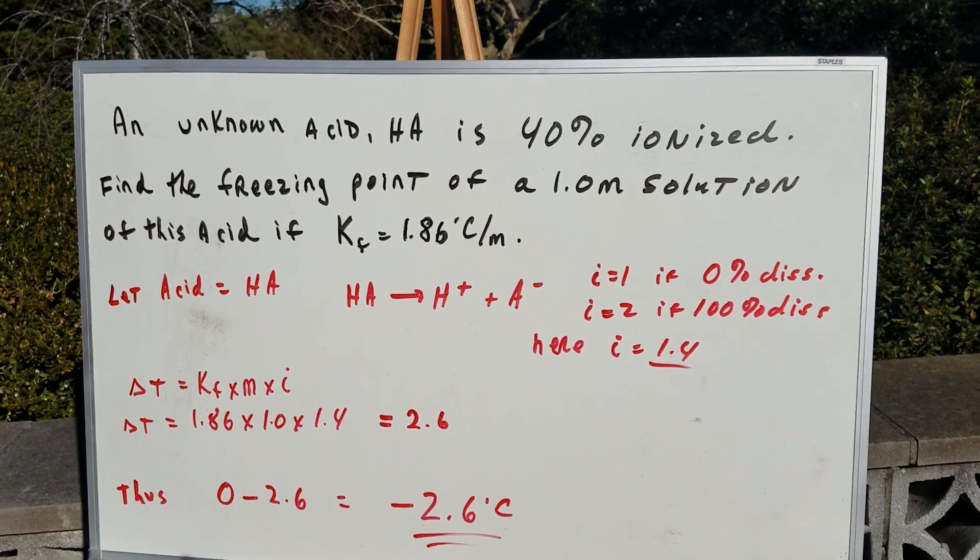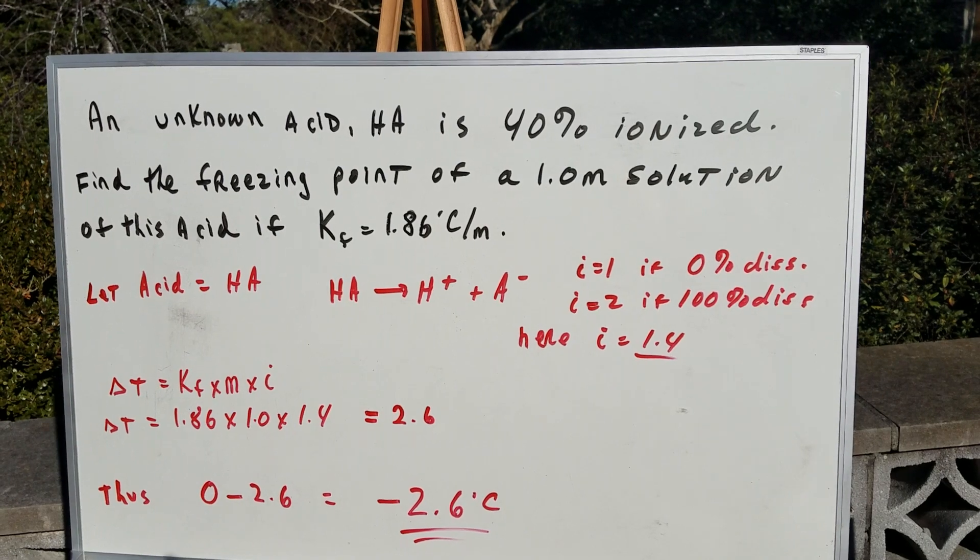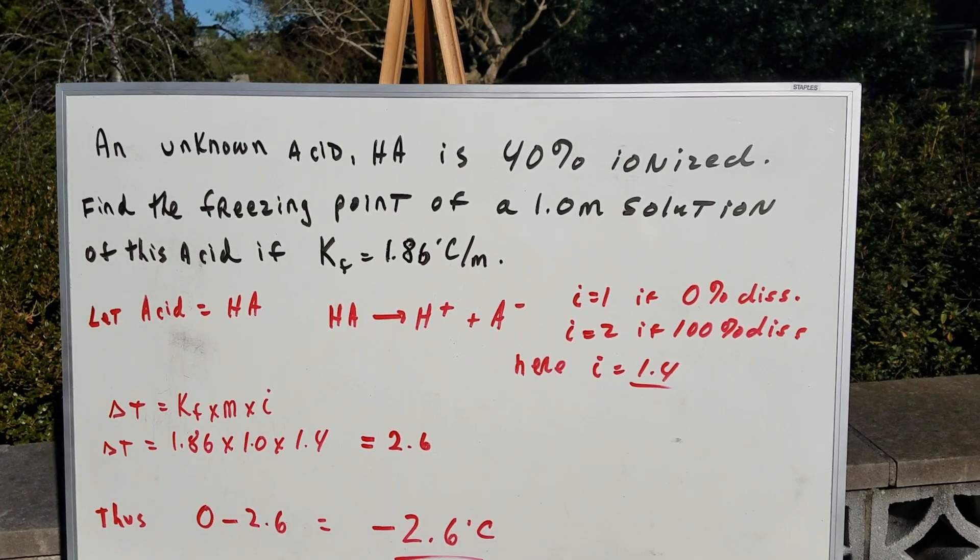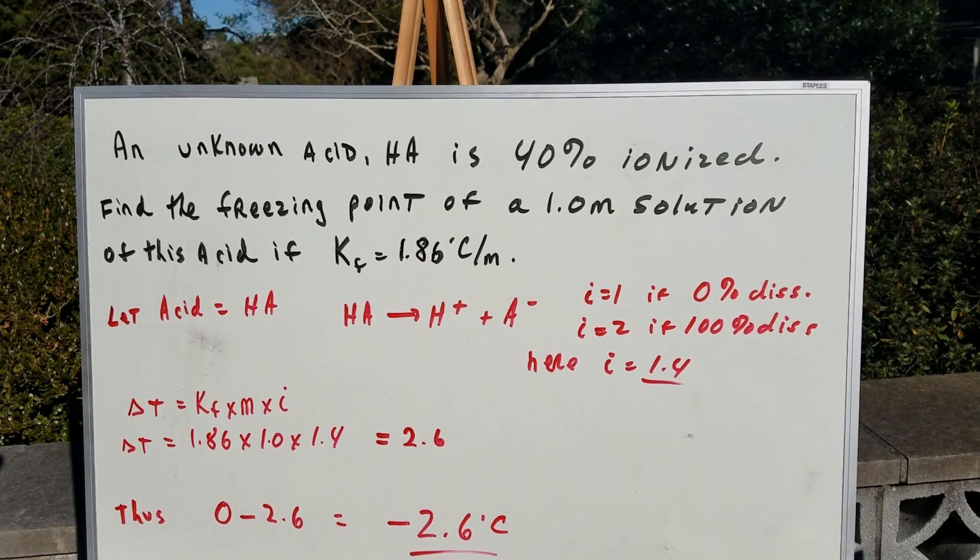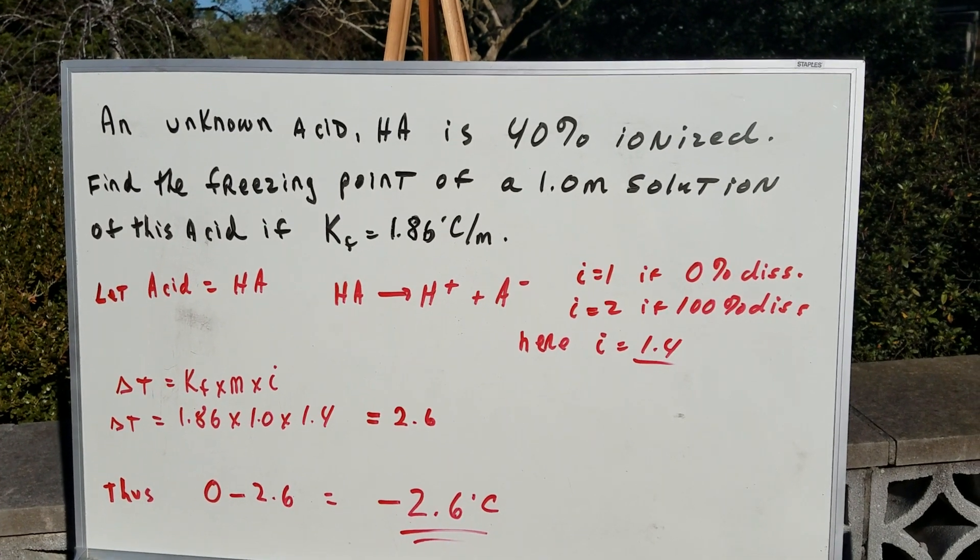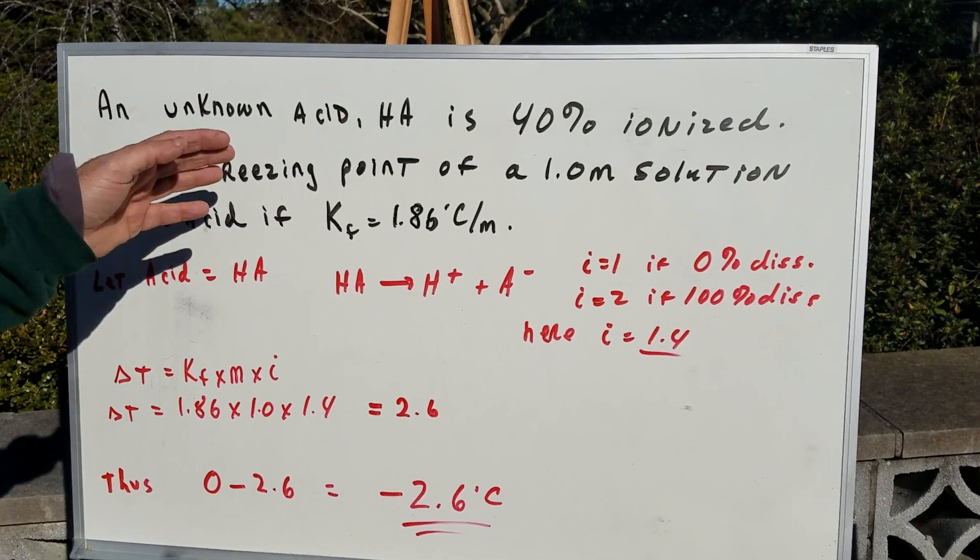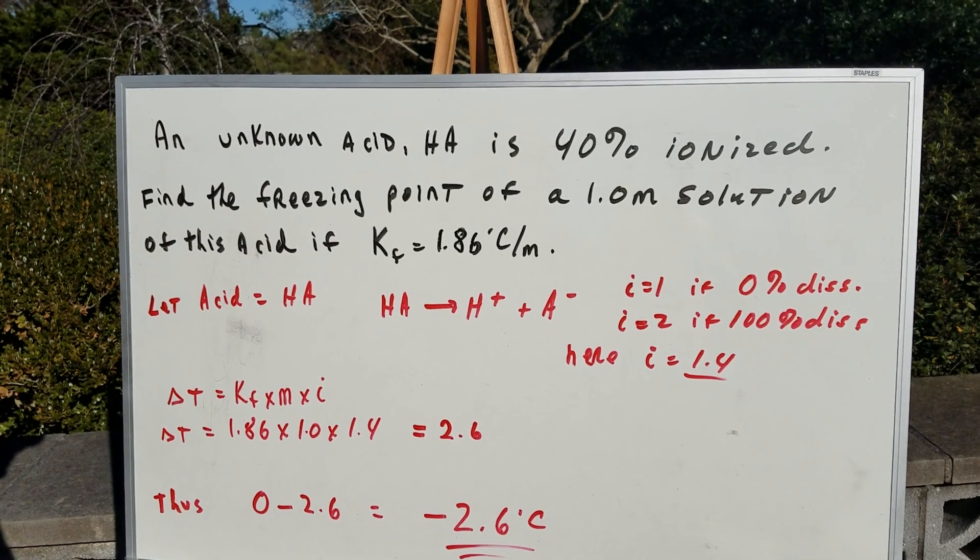Now, the first thing we want to do is we know that the normal freezing point of water, and if they don't tell you the solvent, we're going to assume the solvent is water. The KF of water was given. The normal freezing point of water is zero. So even if you had a guess, if you throw something, an impurity in water, the freezing point would be less than zero.